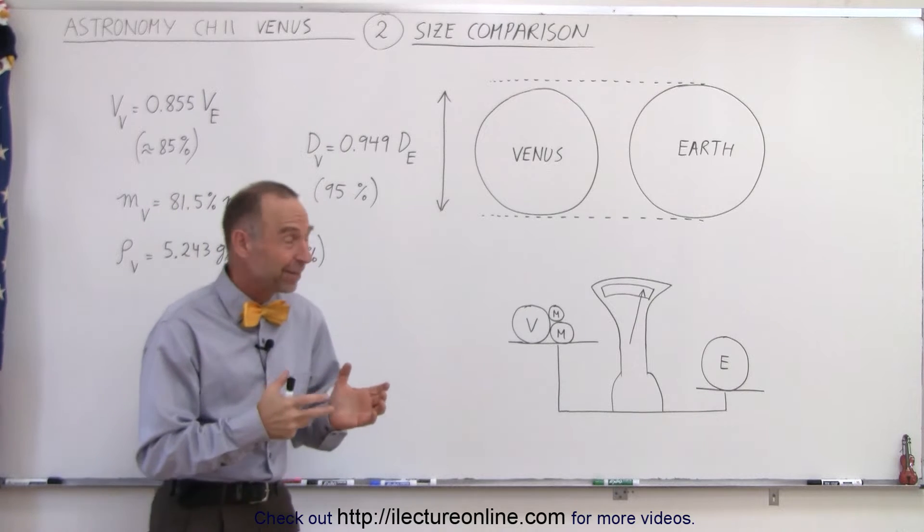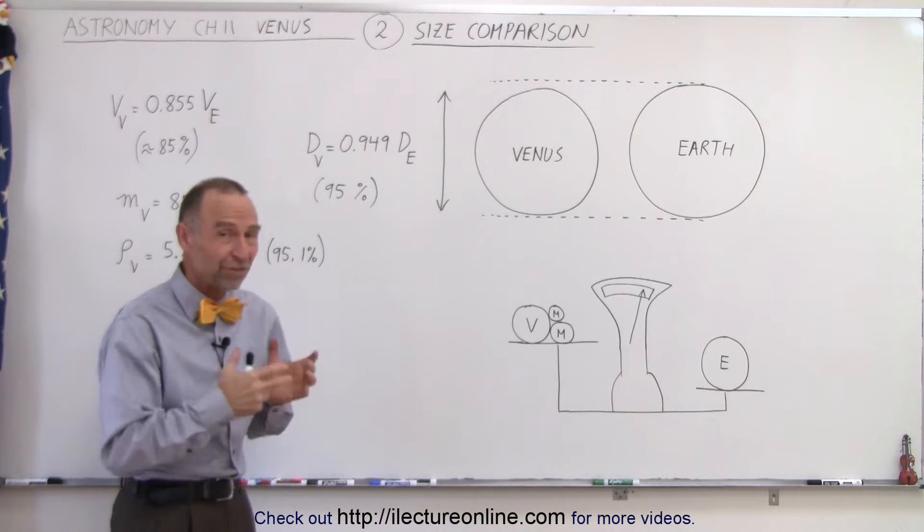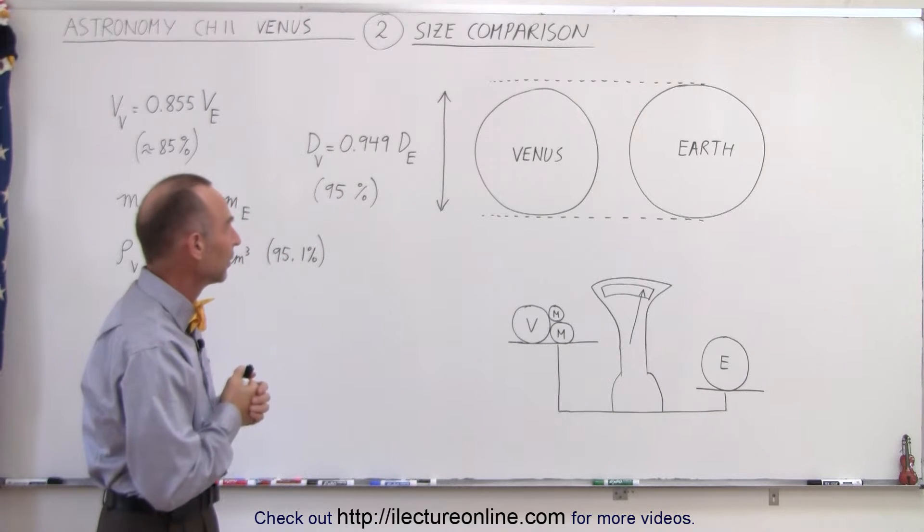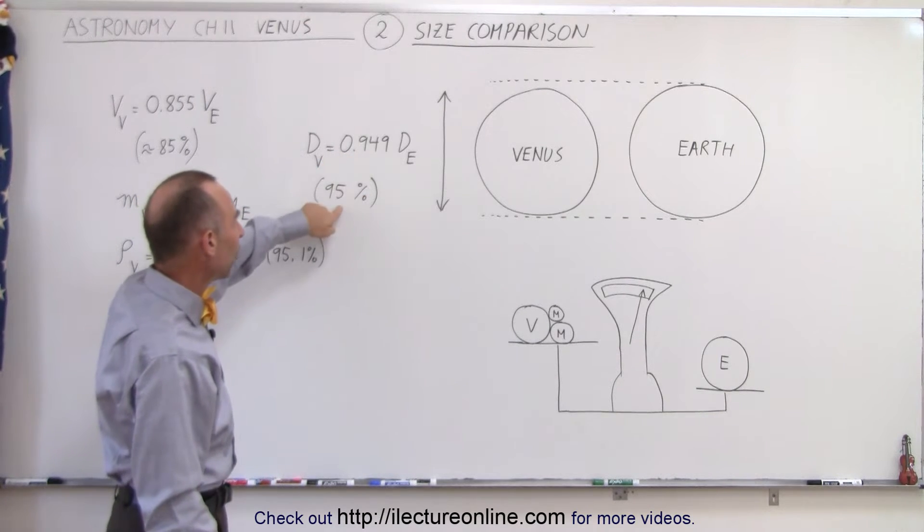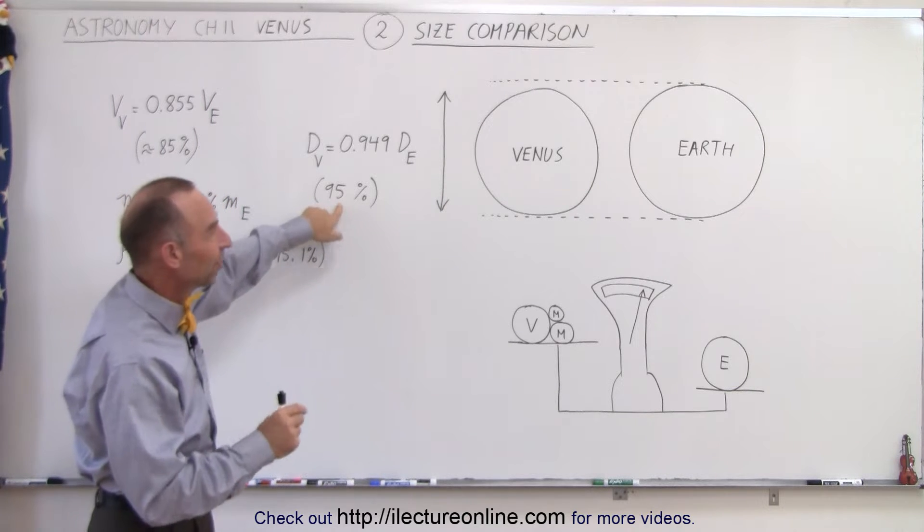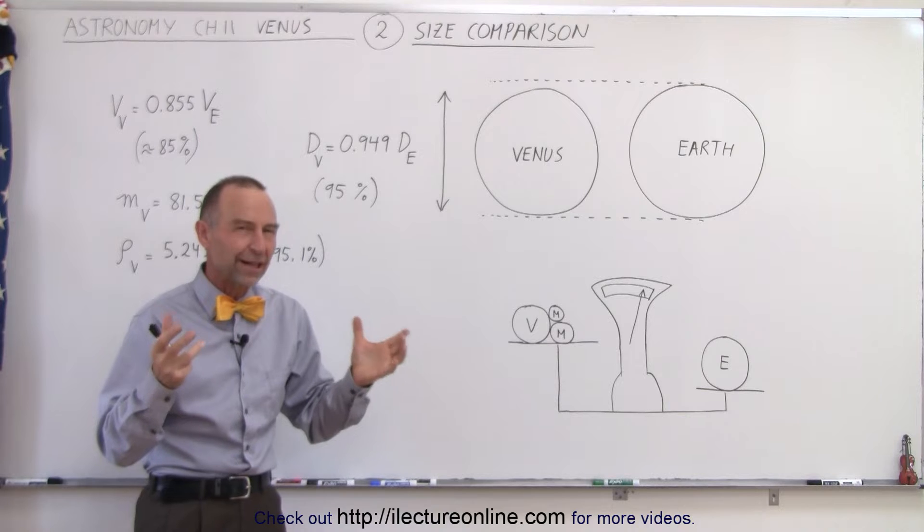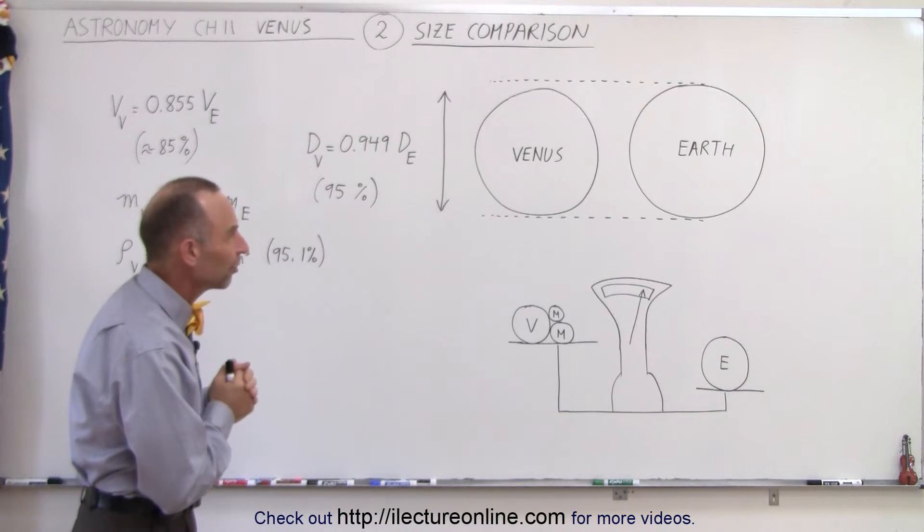It turns out the size of Venus is almost the same as the size of the Earth, especially when we talk about the diameter or the radius of the planet. The diameter is almost 95 percent the diameter of the Earth. So when you put them side by side you don't see a lot of difference relative to the size.